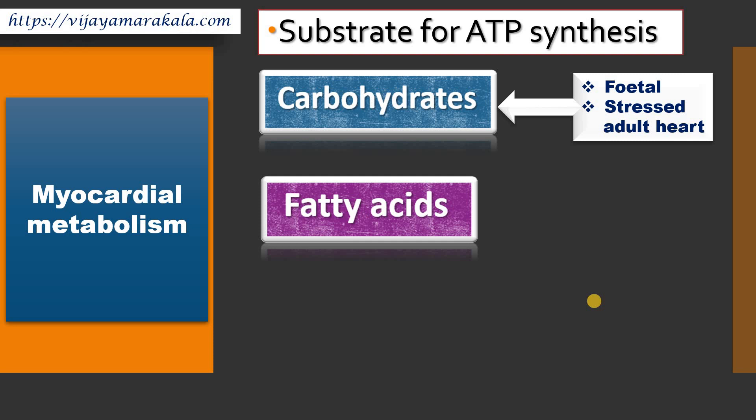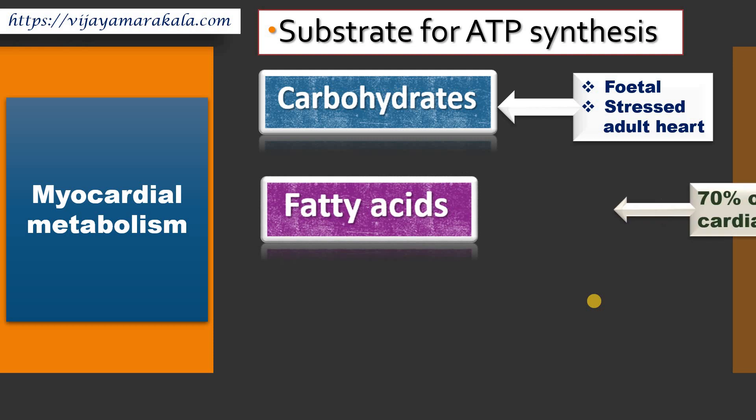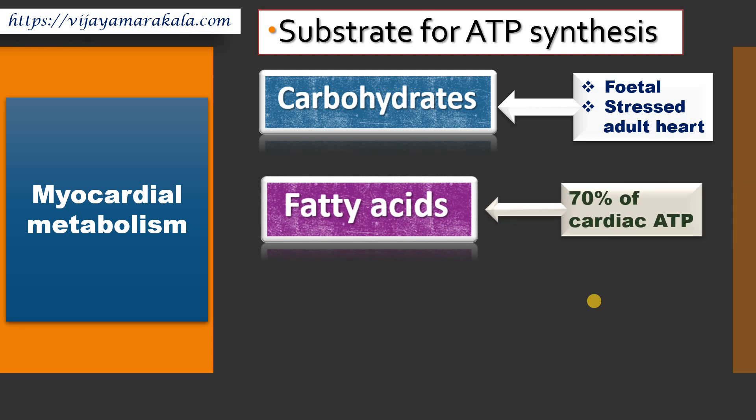We know that fatty acids give twice the energy of carbohydrates. 70% of ATP in the myocardium is derived from oxidation of fatty acids — that is beta oxidation — and these fatty acids come from chylomicrons by the hydrolysis of triglycerides by lipoprotein lipase.